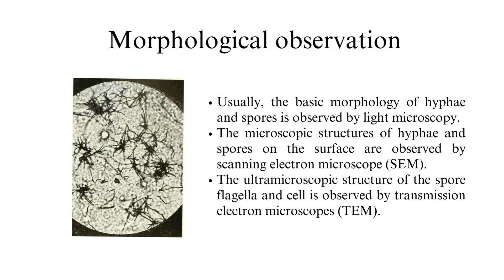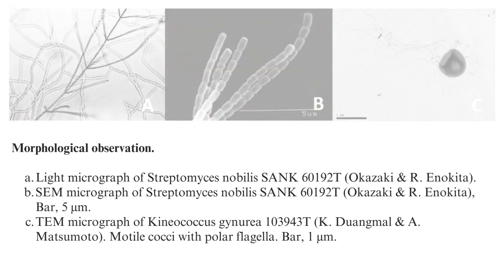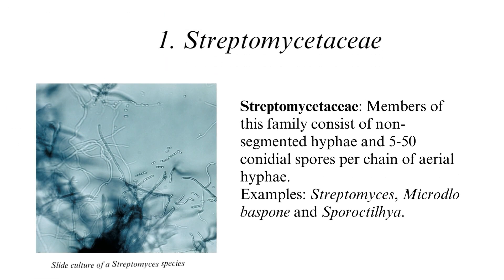Morphological observation: the basic morphology of hyphae and spores is observed by light microscopy. Microscopic structures of hyphae and spores on the surface are observed by scanning electron microscope. The ultramicroscopic structure of the spore, flagella, and cell is observed by transmission electron microscope. These are the morphological observations of Streptomyces nobilis and Kineococcus genuria.